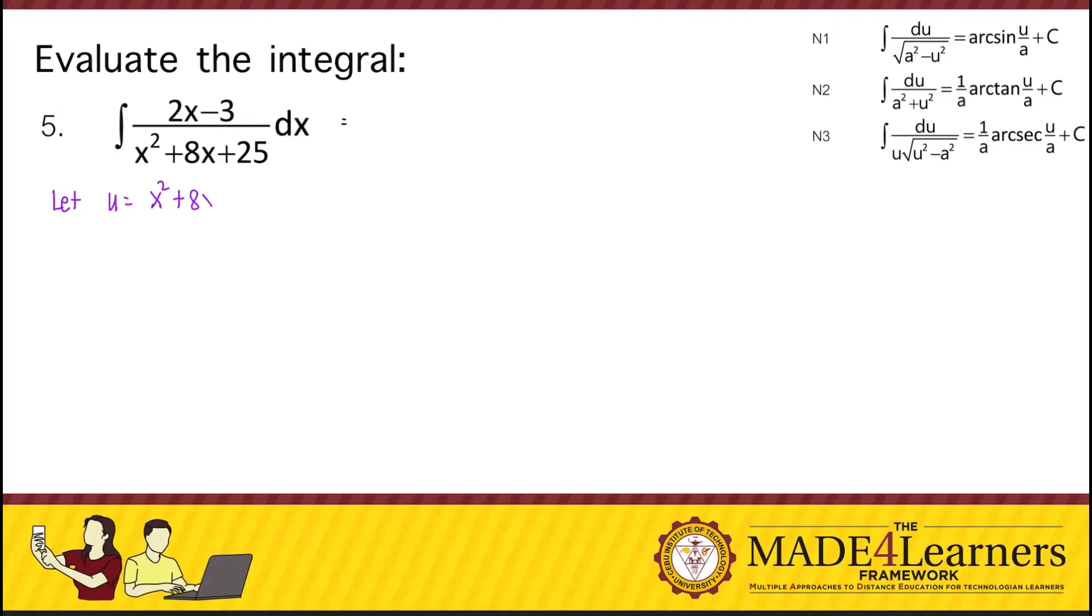So if u is equal to x squared plus 8x plus 25, then du is equal to 2x plus 8 dx.